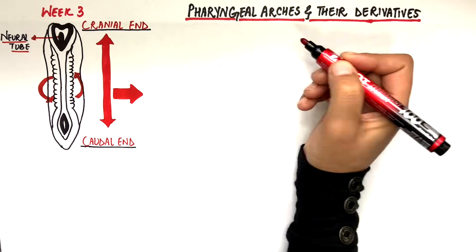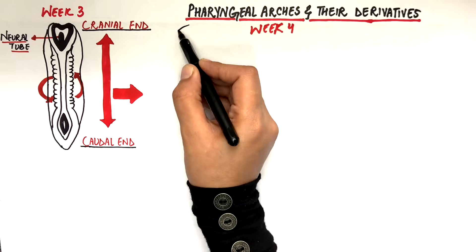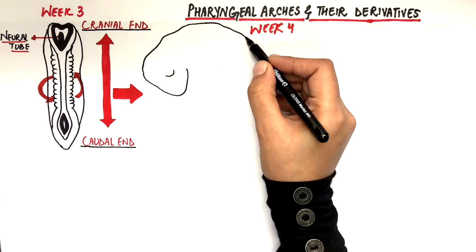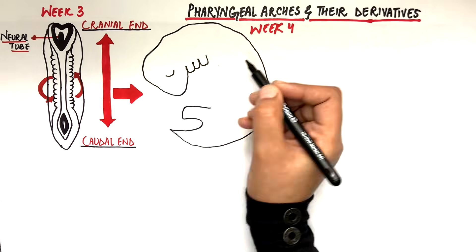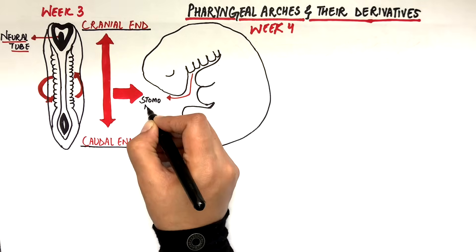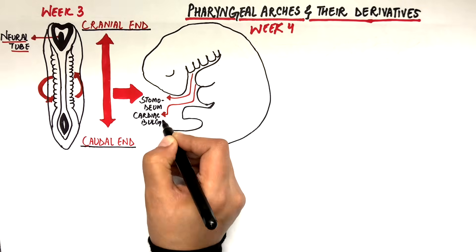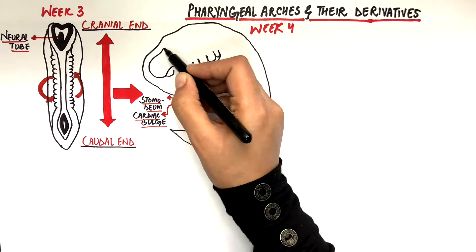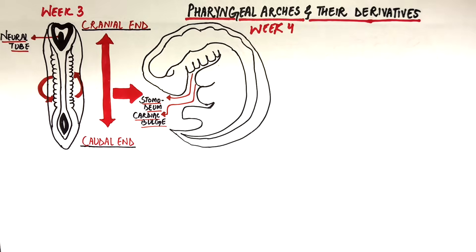At week 4, this will be the folded embryo from a lateral view. Here will be the stomodeum, the cardiac bulge and the neural tube.